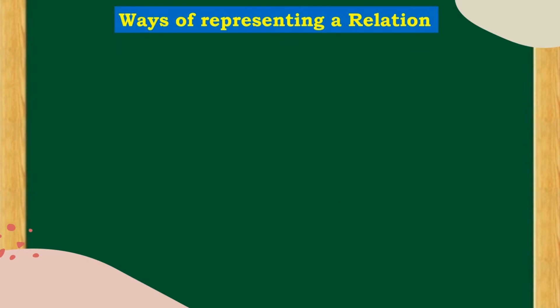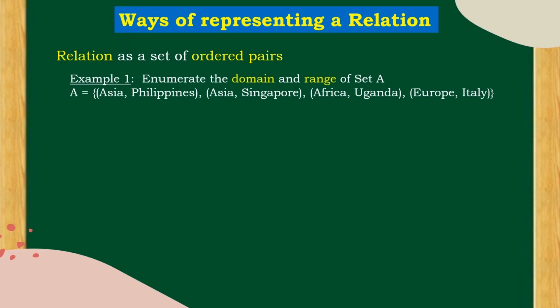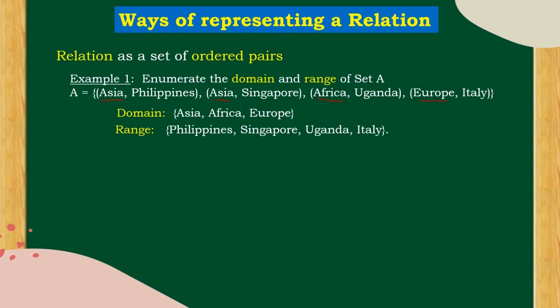The ways of representing a relation — relation as a set of ordered pairs. Let's have an example. These are the set of pairs of a continent and one of their countries: Asia-Philippines, Asia-Singapore, Africa-Uganda, Europe-Italy. The domain, which is the set of first coordinates, is: Asia, Africa, and Europe. The range, which is the set of second coordinates, is: Philippines, Singapore, Uganda, and Italy.